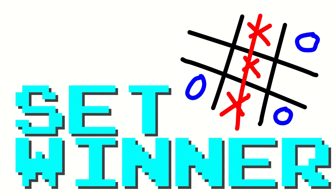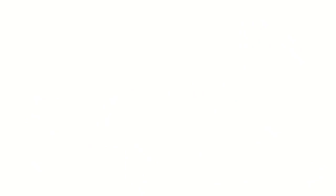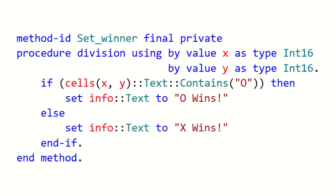Now we just need to implement the setWinner function. The setWinner function is fairly simple. If the cell at the coordinates passed didn't contain an O, the info box is set to O wins. Otherwise, X must have won, so it's set to X wins.